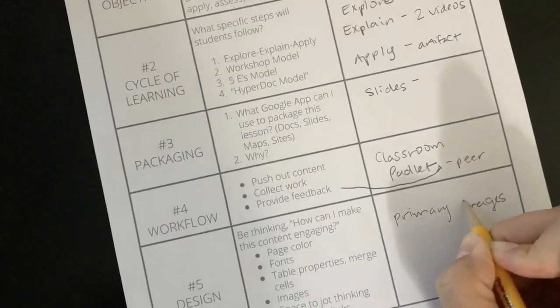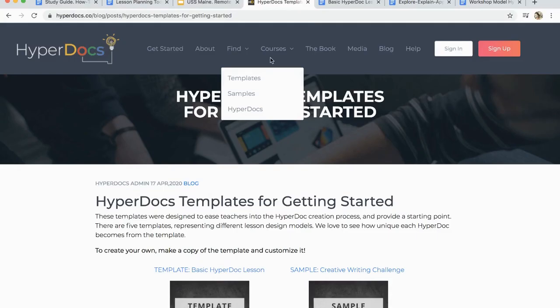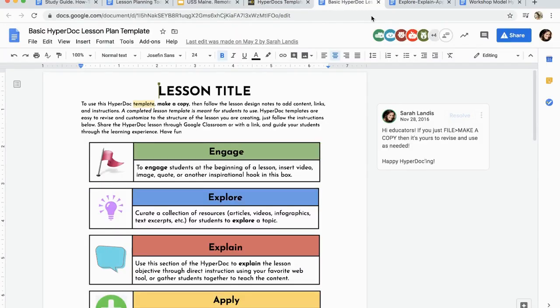This can be done in one of three different ways. Number one, you can remix a HyperDoc lesson that you have seen. Just file and make a copy. Number two, you can use a template. Templates can be found on our website. Once you select one that fits your cycle of learning, all you have to do is file and make a copy.